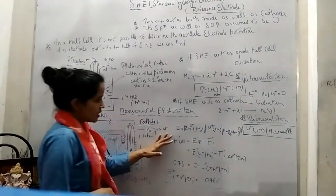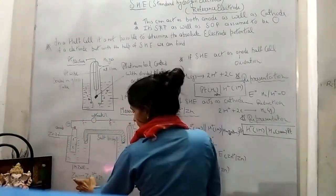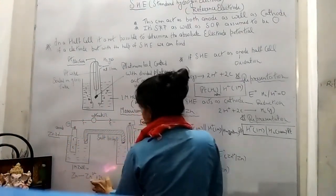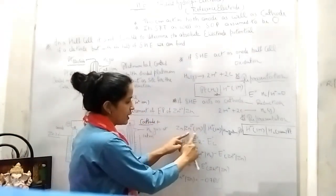Here I have represented the cell. It means anode side: Zn loses its two electrons to become Zn²+. Zn to Zn²+ of one molarity.